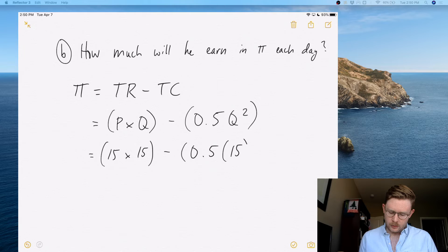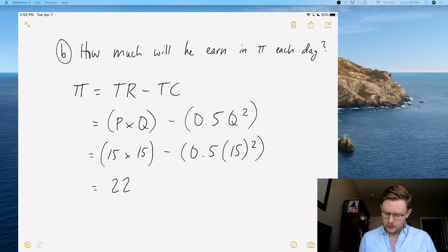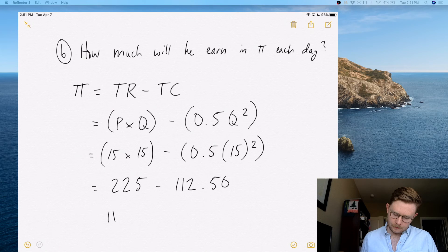If you do that out, you should end up with 225 minus 112 dollars and 50 cents, so Bob's profit is $112.50. And you're done. Like I said, this is a pretty simple example.